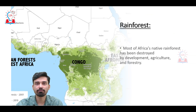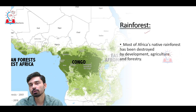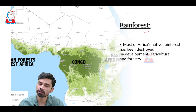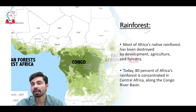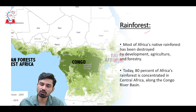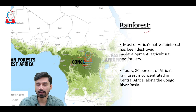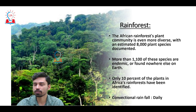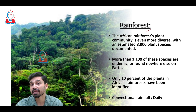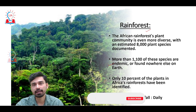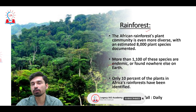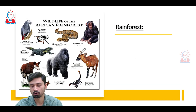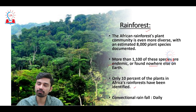The second important region of the African continent is the equatorial rainforest. Unfortunately, most of Africa's native rainforest has been destroyed due to continuous development, agriculture, and forestry, but 80 percent of Africa's remaining rainforest is concentrated in the central African region along the Congo River basin. The African rainforest is a very diverse forest with an estimated 8,000 different types of plant species documented, of which more than 1,100 are endemic — meaning they evolved in these equatorial rainforests and are not found anywhere else on Earth.